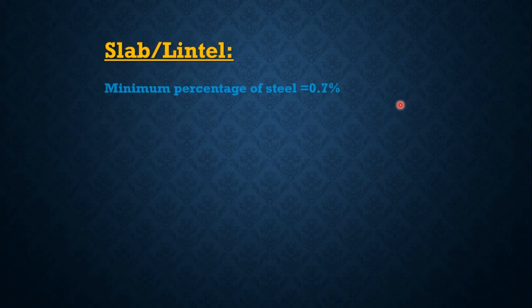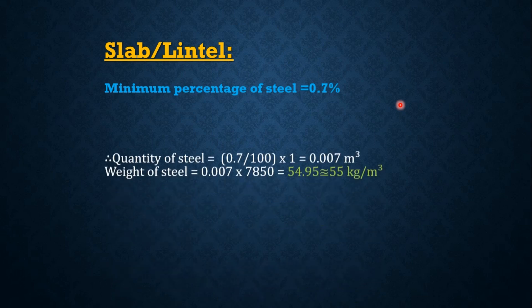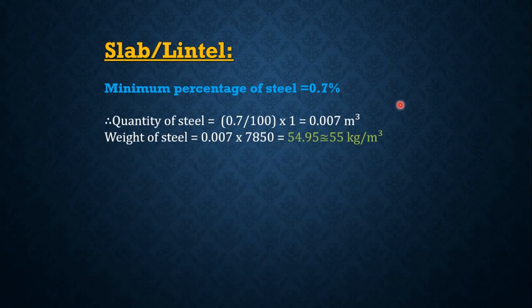In a slab, the minimum percentage of steel is 0.7%. Therefore, the quantity of steel equals 0.7 divided by 100 multiplied by 1, which equals 0.007 meter cube. The volume of steel required in a slab is 0.007 meter cube. Since weight equals volume multiplied by density, the volume is 0.007 and the density of steel is 7850. Multiplying these two values gives 54.95, which is approximately 55 kg per meter cube.